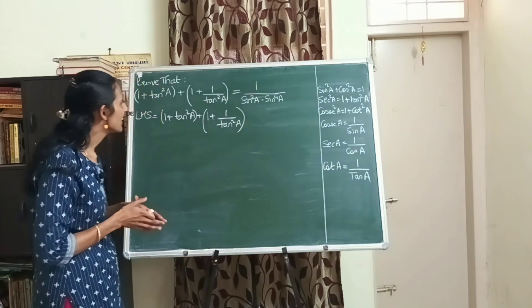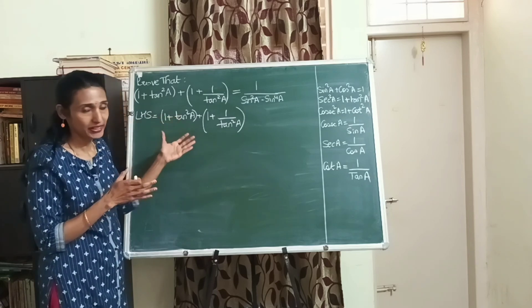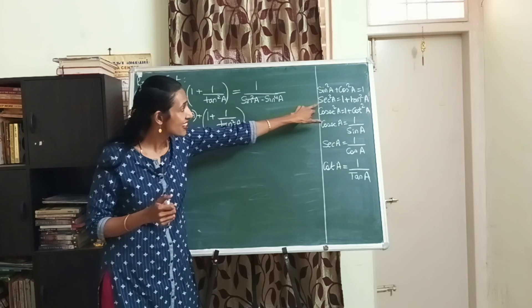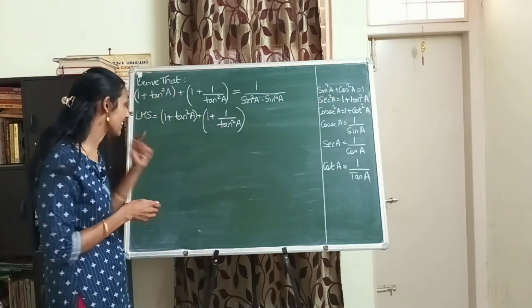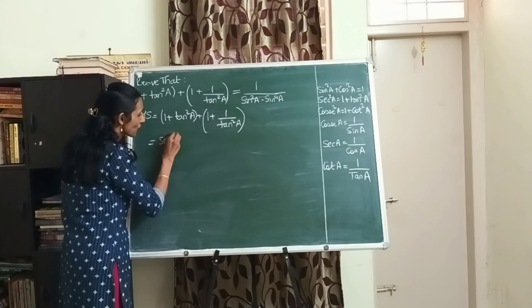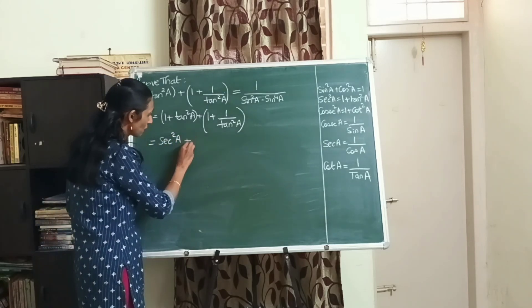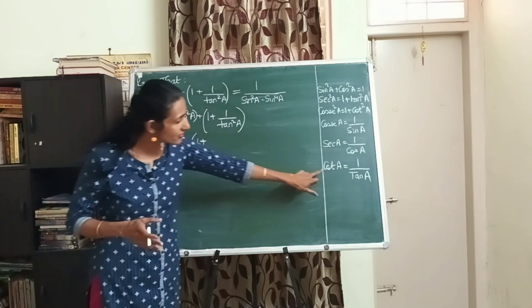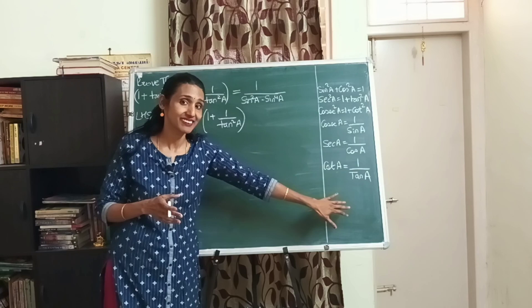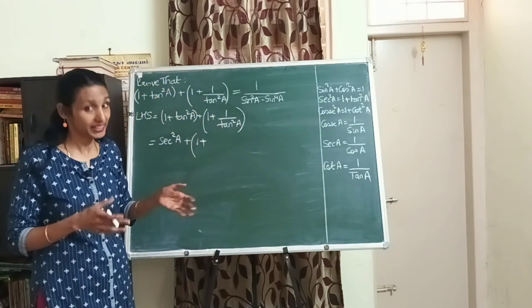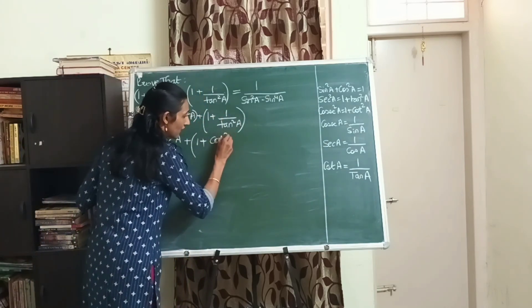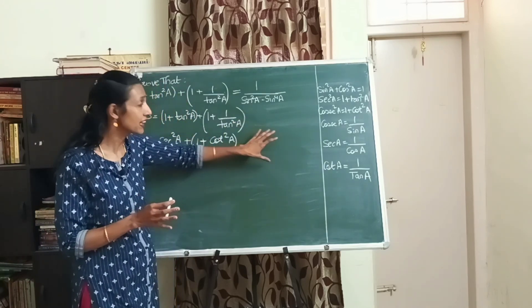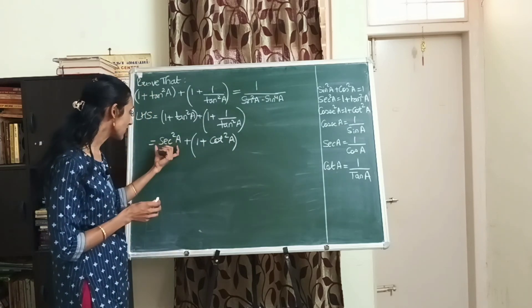Now the third step is make use of all these trigonometric identities and formulas and try to arrive at the right hand side. We have 1 plus tan square a. Is there any identity that will help us? Yes, sec square a is 1 plus tan square a. So I can write 1 plus tan square a as sec square a. Then there is 1 by tan square a. We know that cot a is 1 by tan a, so 1 by tan square a is cot square a.